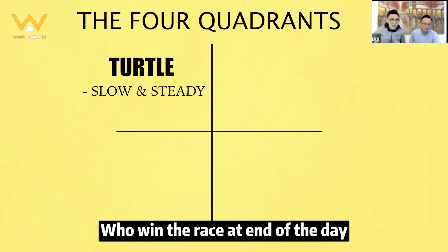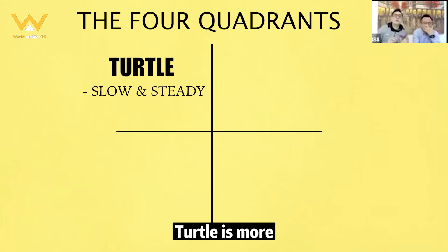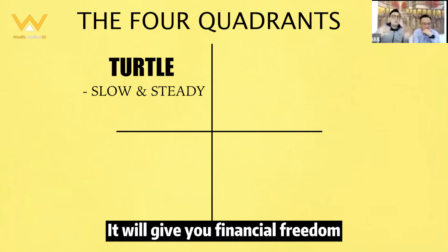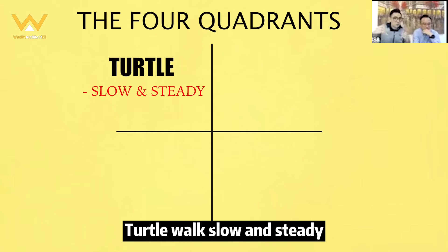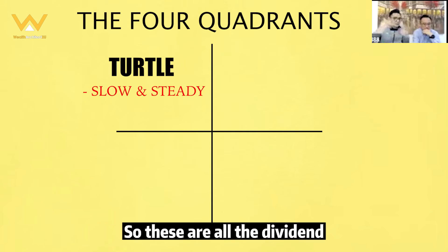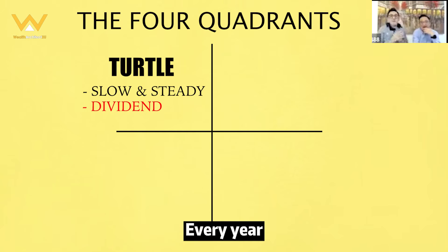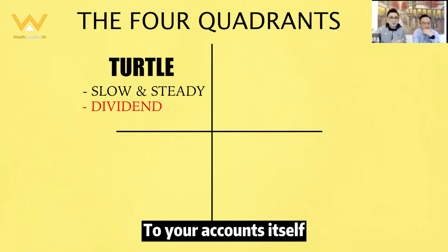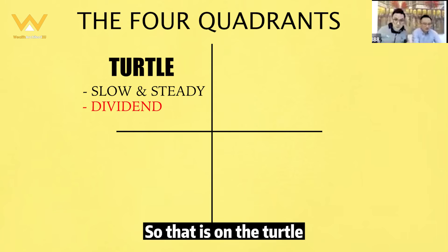Remember the turtle and the rabbit — who wins the race? At the end of the day, it's the turtle. The turtle quadrant gives you financial freedom. Slow and steady, these are all dividend stocks. You don't need to work — every year 20, 30, 40 thousand in dividends come into your account from these giant high-dividend-yield companies.